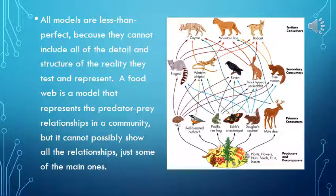Models cannot include all the detail and structure of the reality they test and represent. A food web is a model that represents the predator-prey relationships in a community, but it cannot possibly show all the relationships — just some of the main ones.